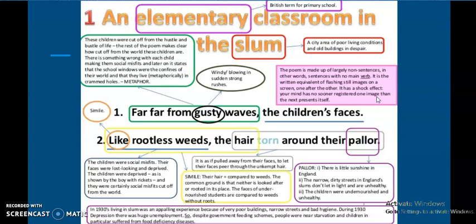Now moving forward, the lines of the poem have been broken down and meanings have been highlighted. We shall first begin with this box in pink which says the poem is made of largely non-sentences, in other words sentences with no main verb. It is the written equivalent of flashing still images on a screen. So as you read the poem, it will feel as if someone is flashing lots of images on a screen. This is what the poem is more about. There are a lot of images in the initial part.